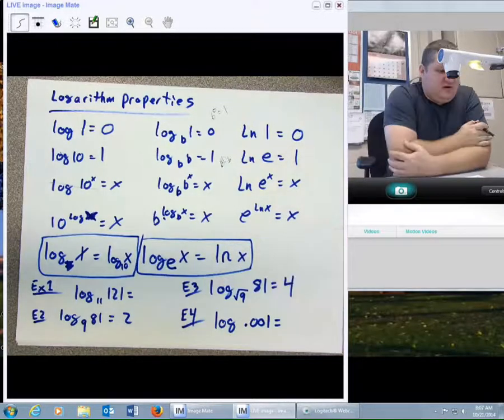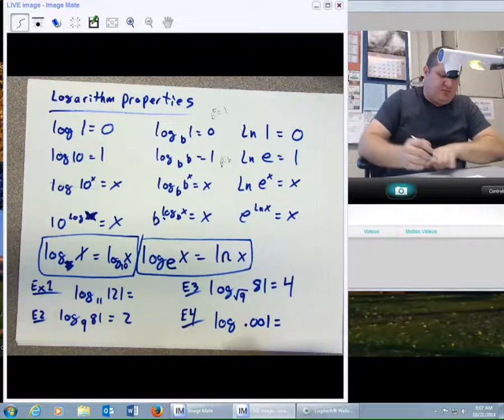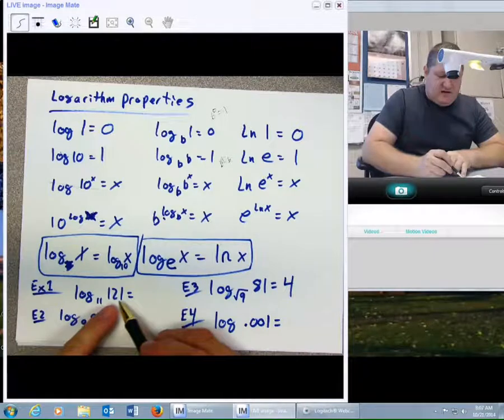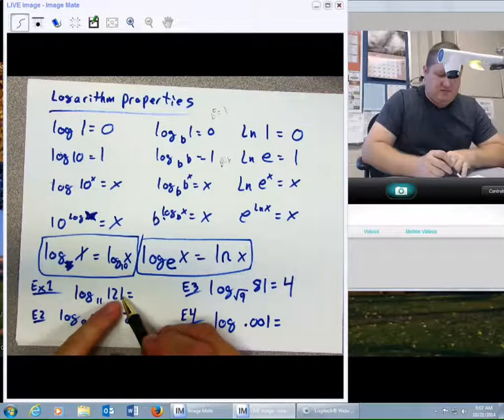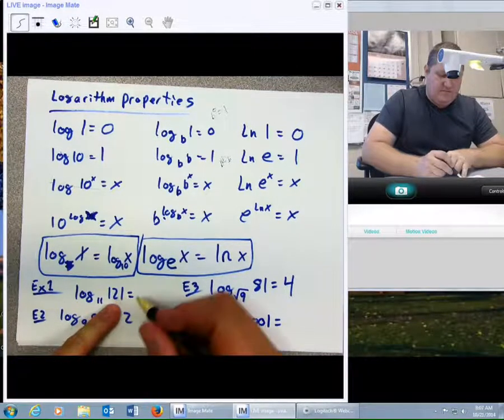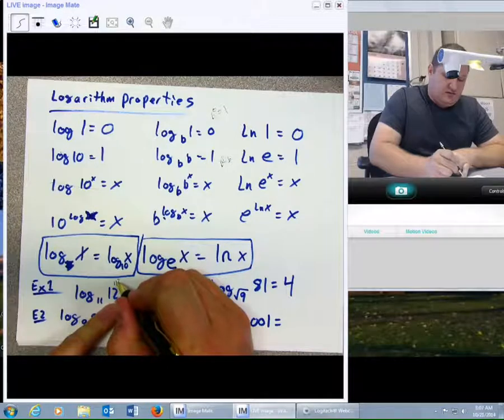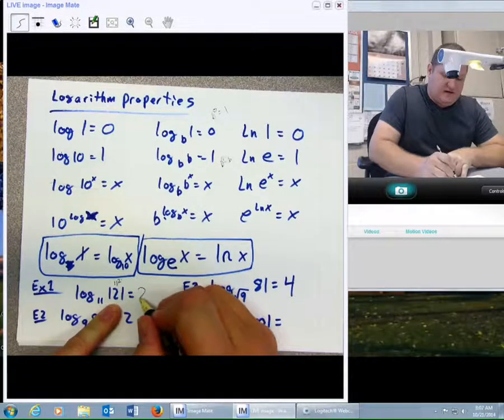Now, given these properties, let's do a couple examples. Log base 11 of 121, how many 11s does it take to make 121? Well, 121 could be written as 11 squared, so how many 11s does it take? 2.